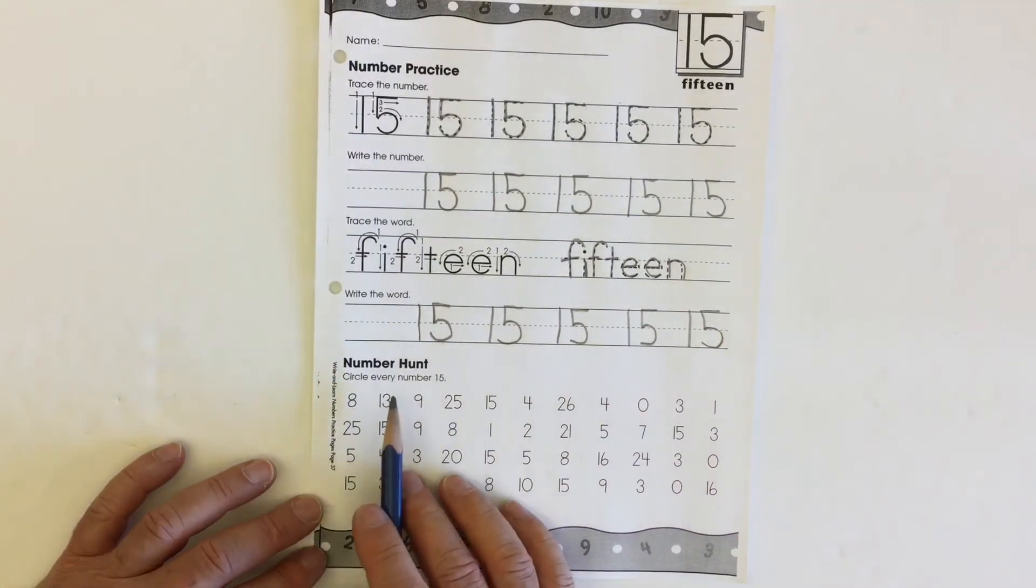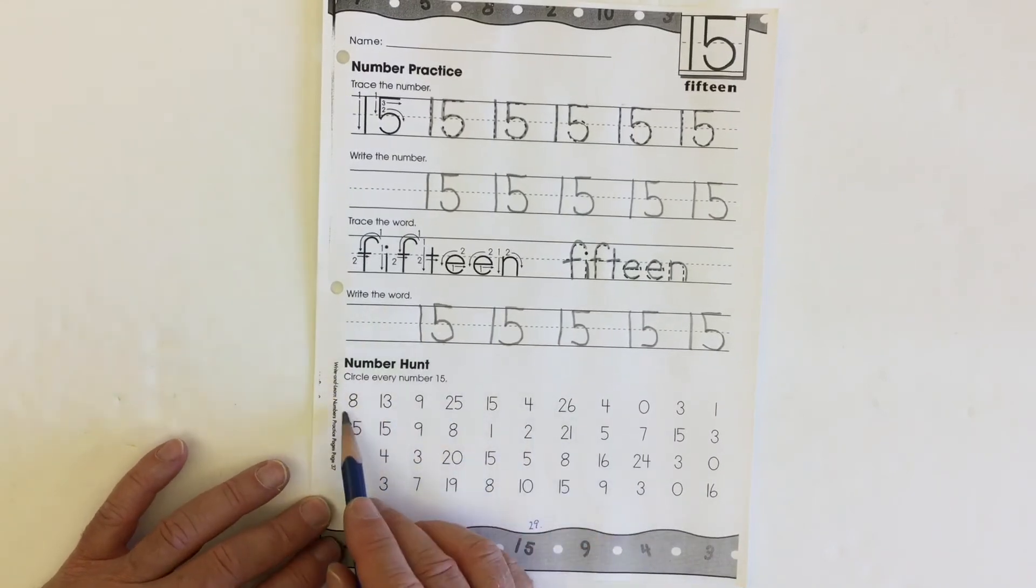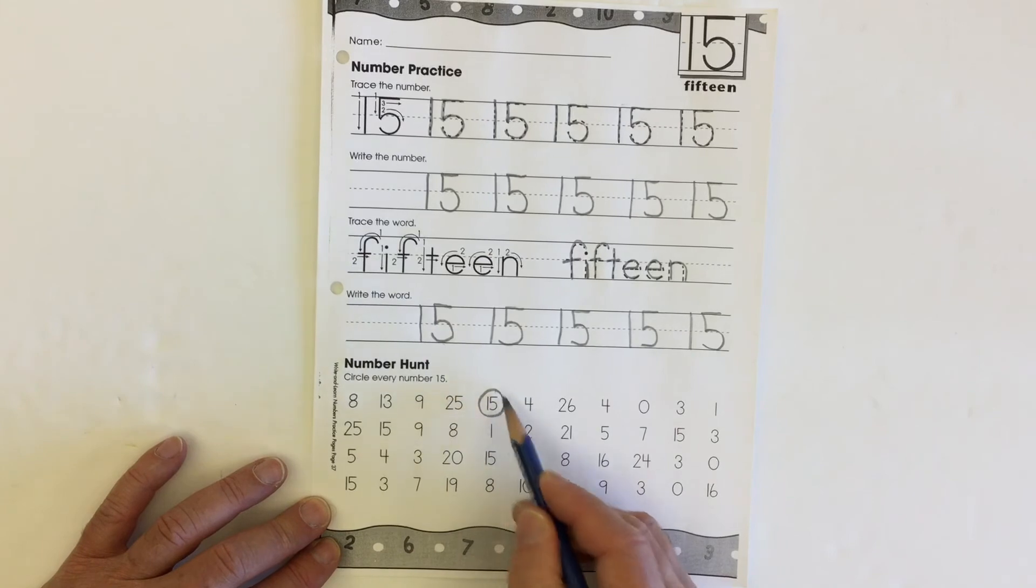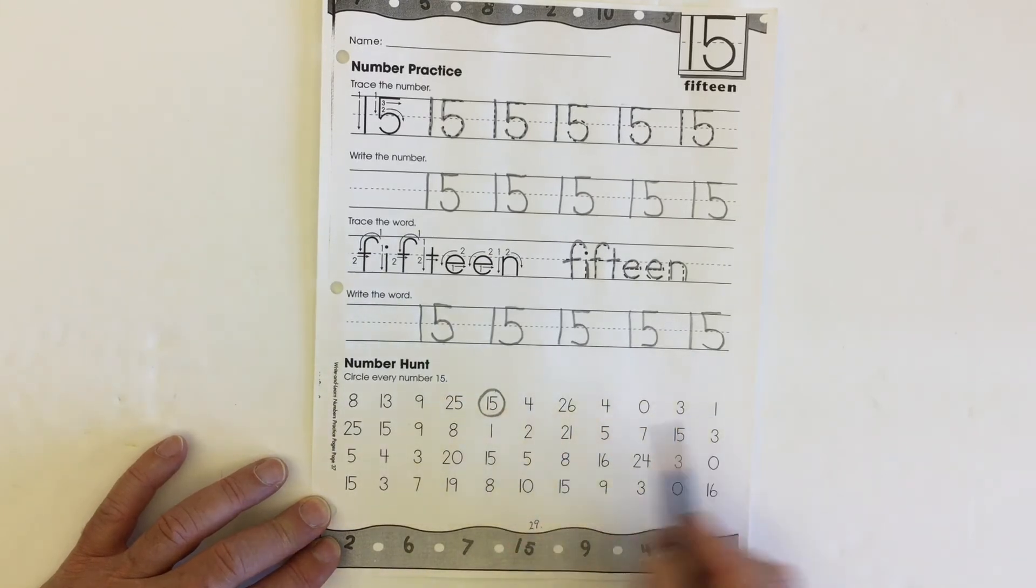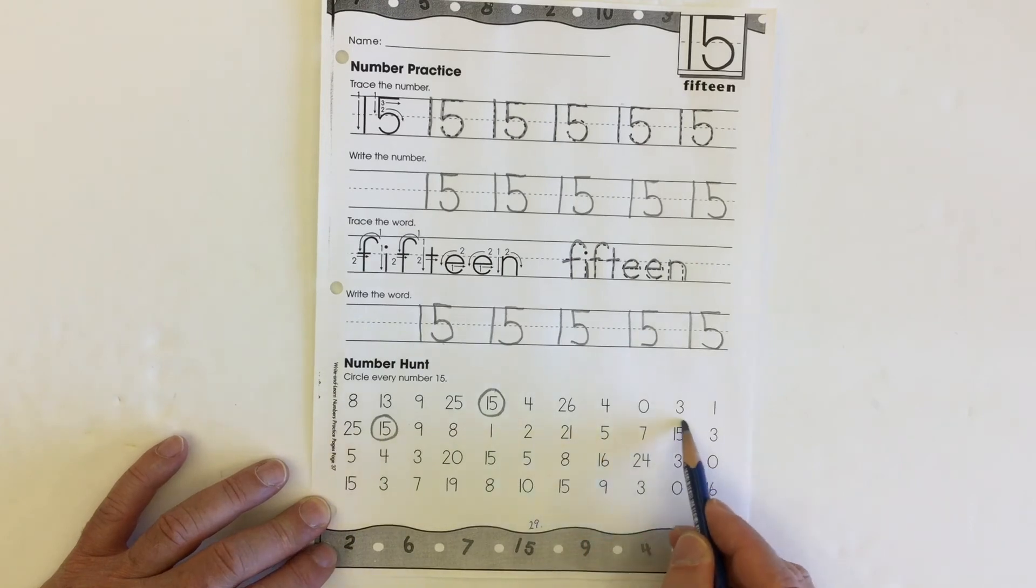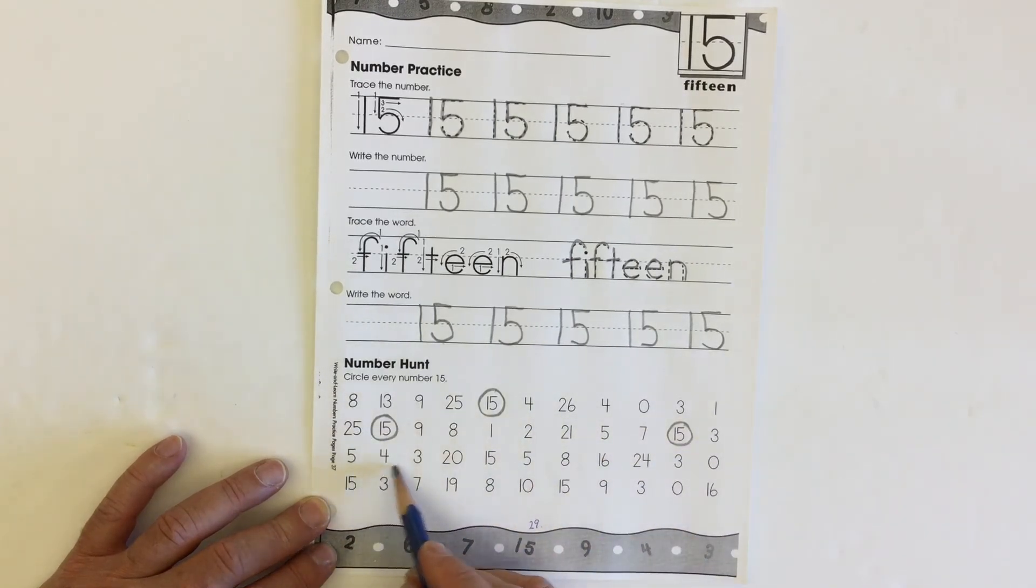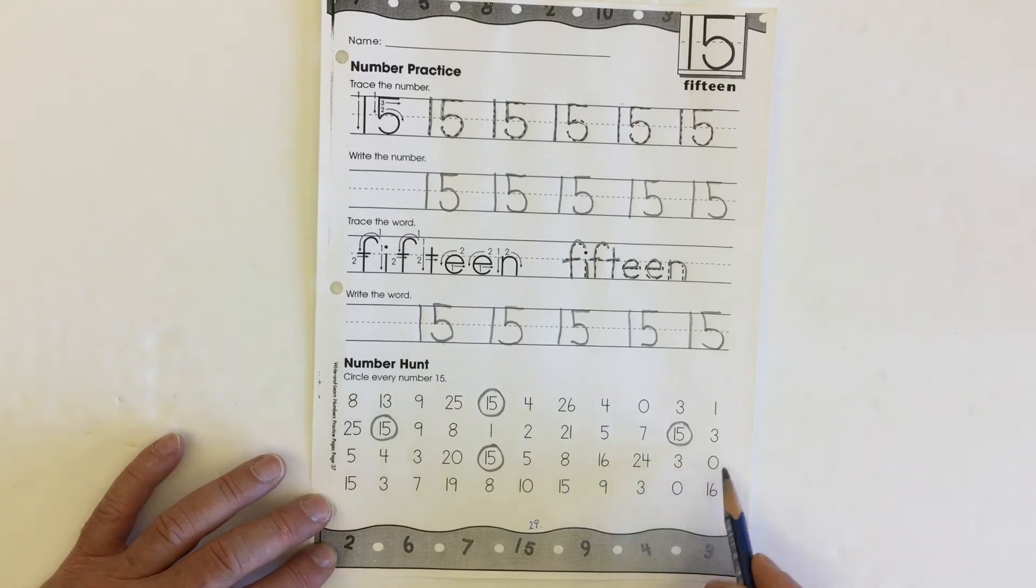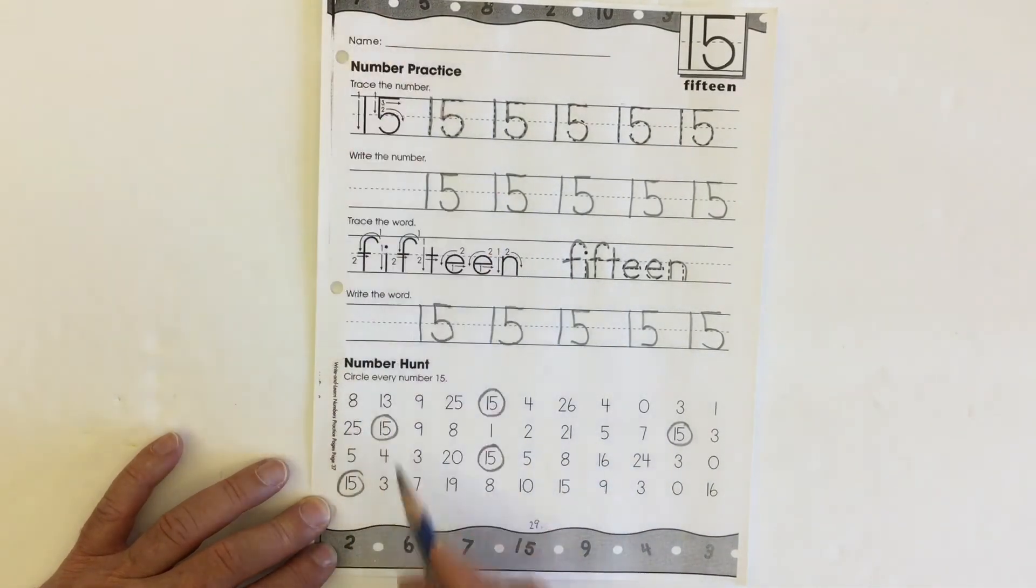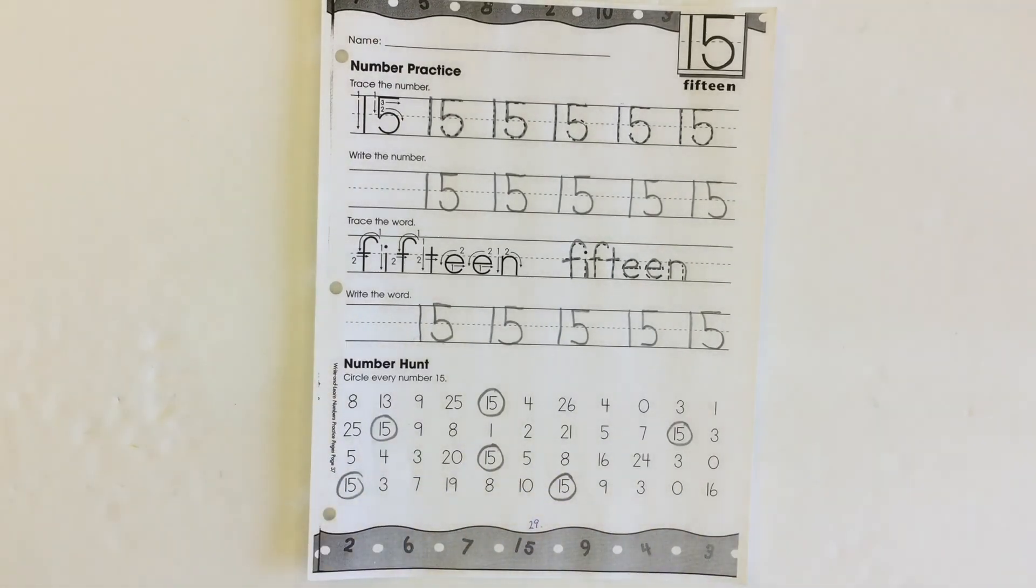All right, number hunt. Circle every number 15. I'll start at the top and go across the row, looking for them and circling them. You might not see that one if it's caught in the fold of your book. There we go, 15. There we go, 15.